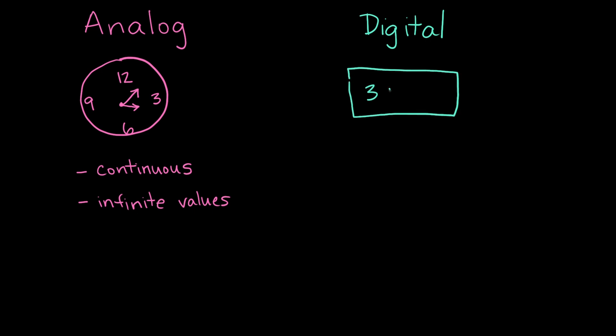Compare that to a digital clock. A digital clock is only going to show you 3:06 or 3:07. It will never display any of the many fractional seconds between those two times. Digital only takes on certain discrete values, and it has a finite number of those values.